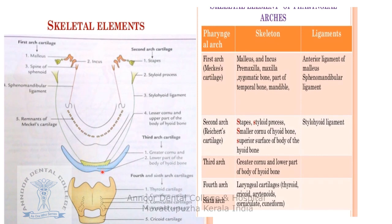The fourth and sixth arches contain the laryngeal cartilages. The laryngeal cartilages are: thyroid, cricoid, corniculate, cuneiform, and arytenoid cartilages. Also derived from these arches are the thyrohyoid ligament and the epiglottis, which forms from the mesenchyme of the hypobranchial eminence.